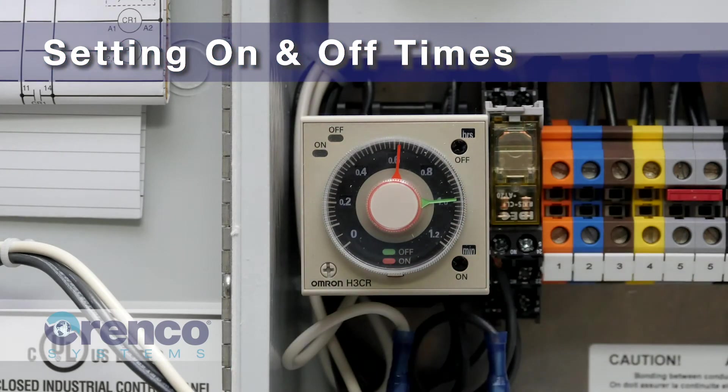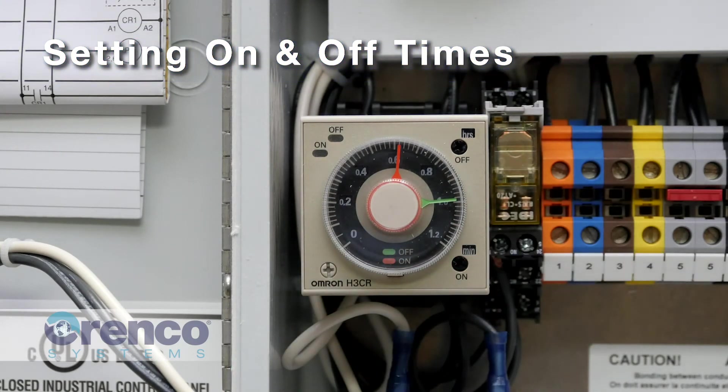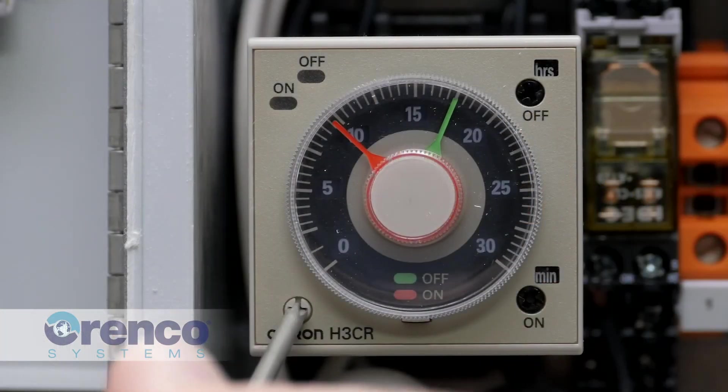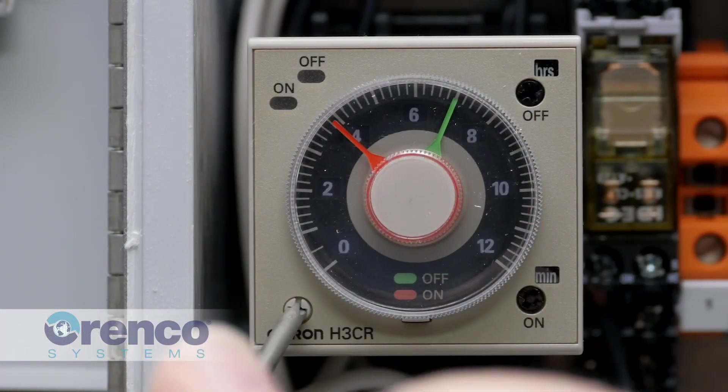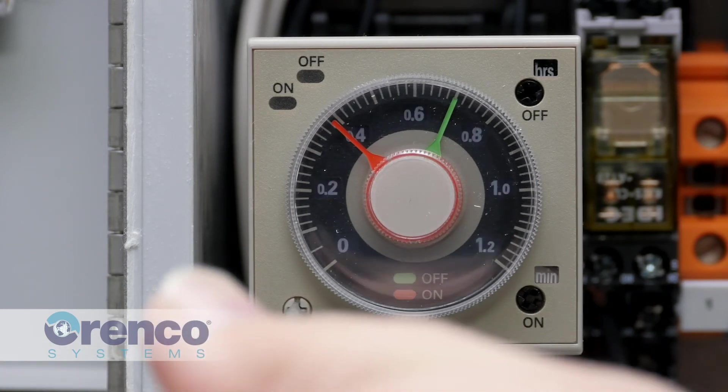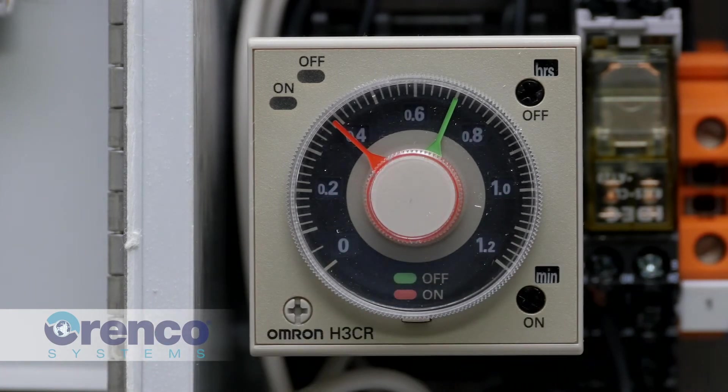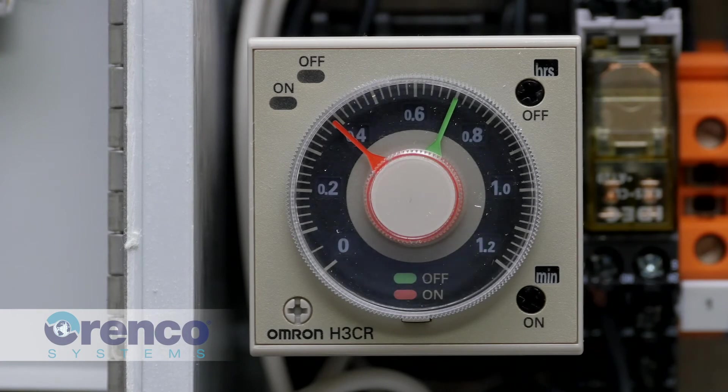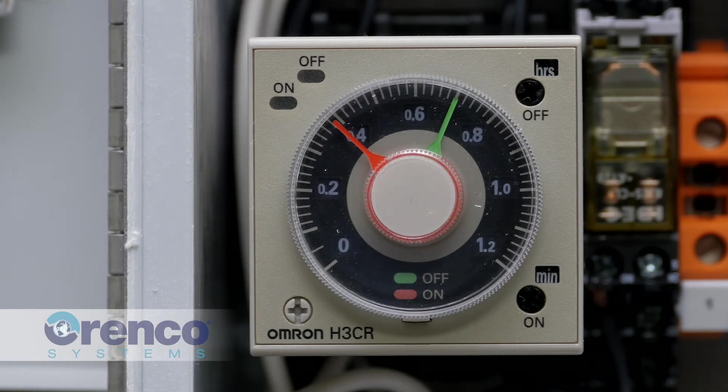To begin, choose an appropriate time range for the longest time on or off in your timer cycle. To adjust the range, simply turn the time range selector either left or right using a small Phillips head screwdriver. The value shown in the bottom right window inside the dial should exceed the longest on or off time in the cycle.